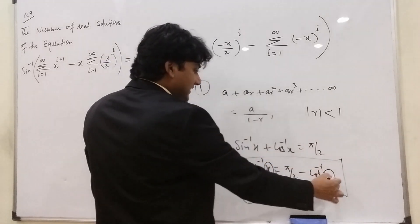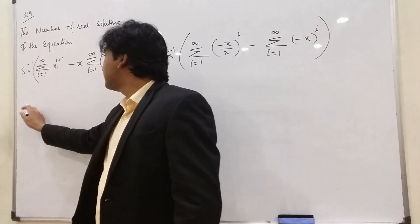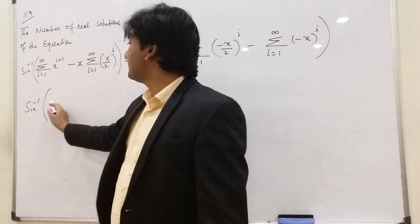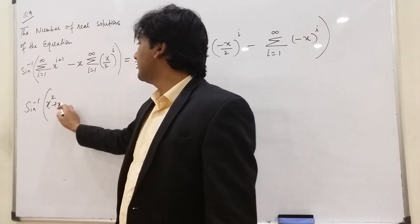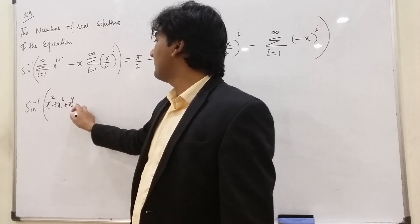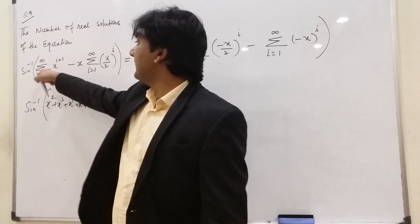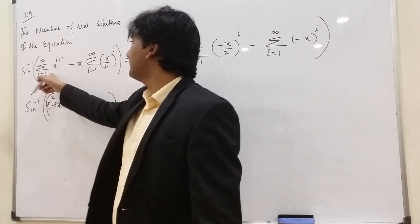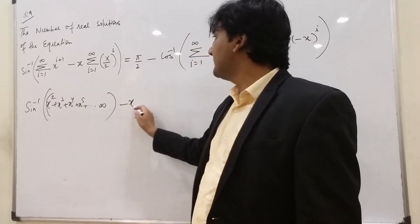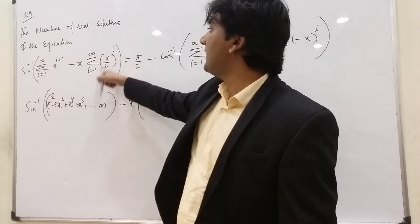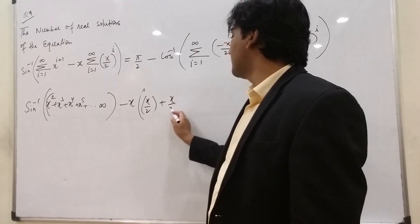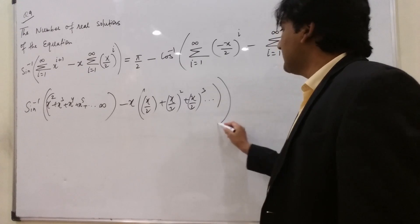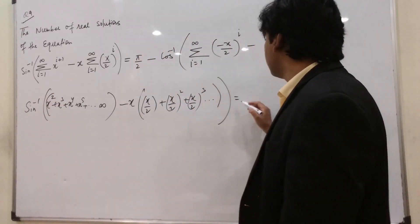Now we expand carefully. For the summation with i from 1 to infinity of x^(i+1): when i=1 we get x², then x³, then x⁴, then x⁵, and so on to infinity. Then minus x. Then for the summation of (x/2)^i: first term is x/2, then (x/2)², then (x/2)³, and so on.